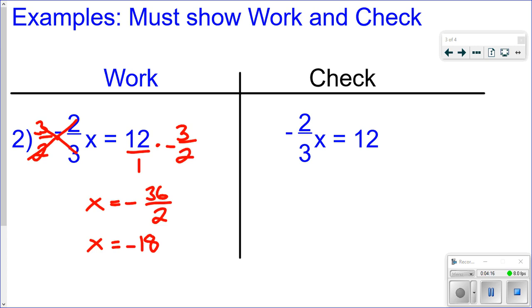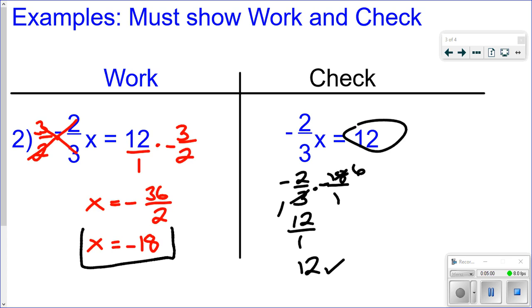So let's check that and see if it works out. I'm going to multiply negative 2 thirds times negative 18. This time I'm going to go ahead and cross-simplify here. So the 3 and the 18 have a common factor of 3. So if I divide them both by 3, I would get 1 and 6. And so now I'm multiplying 2 times 6 is 12. 1 times 1 is 1. And 12 over 1 is just 12, which is what I wanted. So I know that I got the correct answer of x equals negative 18.